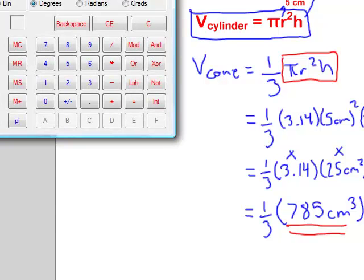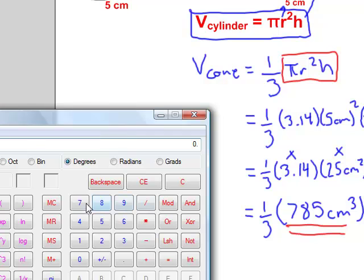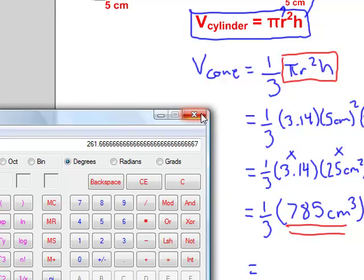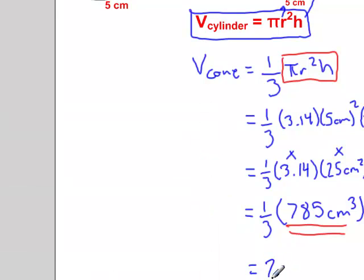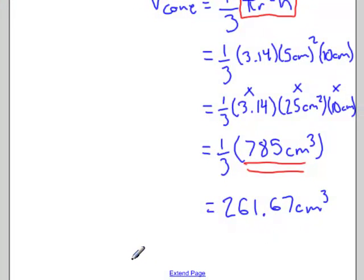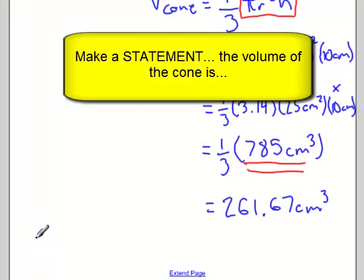Again, I'll take out my calculator. We'll take 785 and divide it by 3. And I'm left with a repeating decimal. I'll round to two decimal places. So I'll have 261.67. So I've found the volume of my cone to be 261.67 centimeters cubed.